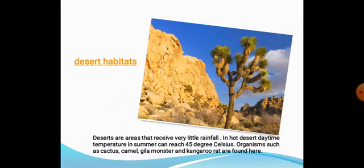The second type of habitat is desert habitat. Deserts are areas that receive very little rainfall. In hot deserts, daytime temperature in summer can reach 45 degrees Celsius. Organisms such as cactus, camel, Gila monster, and kangaroo rat are found here.